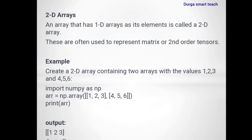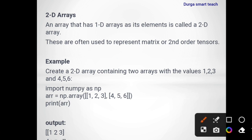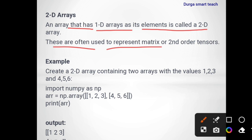The next one is a two-dimensional array. In a one-dimensional array, elements are stored in a continuous memory location. An array that has 1D arrays as its elements is called a two-dimensional array. These are often used to represent a matrix because it contains two dimensions — one is known as rows and another as columns. 2D arrays store elements in rows and columns format.